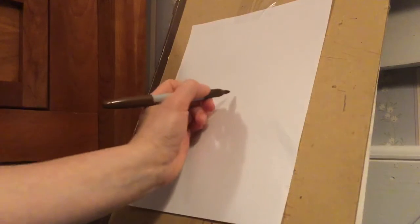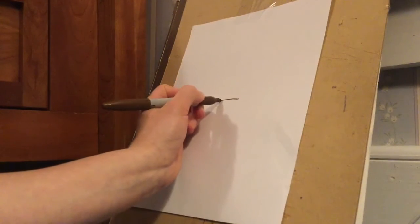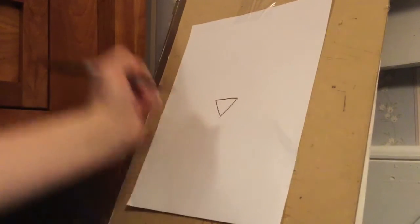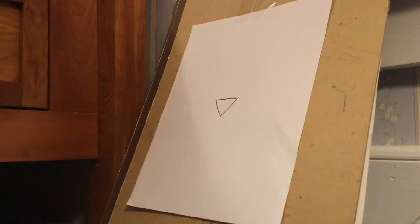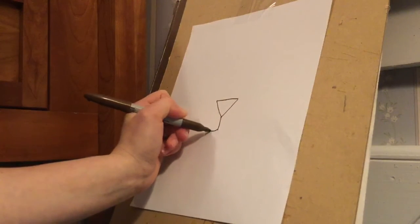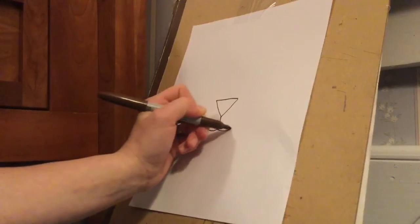To draw the lion you are going to start with an upside down triangle in the middle of your paper. From that triangle you are going to come down, make a short line down, and then two lines curving up to make his mouth.